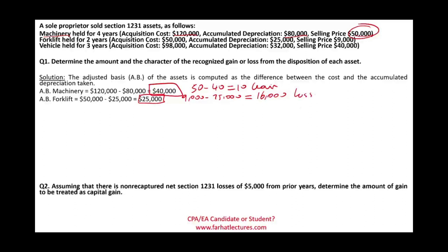The third asset, the vehicle, was held for three years. It has a cost of $98,000, accumulated depreciation of $32,000, and an adjusted basis of $66,000. We sold it for $40,000. $40,000 minus $66,000 gives us a loss of $26,000. So in total we have a gain, a loss, and a loss.